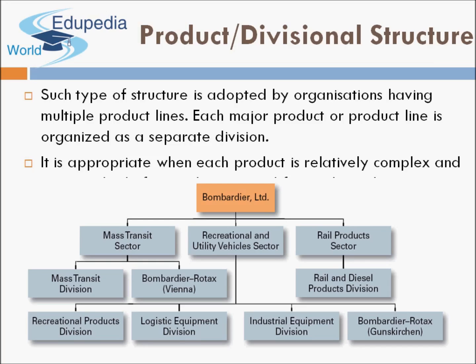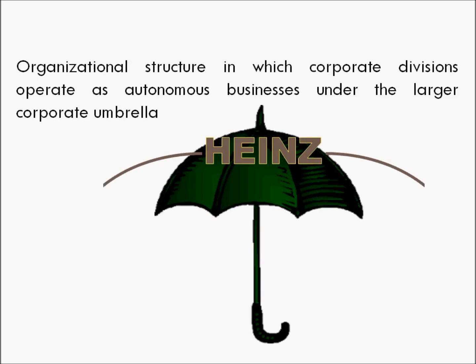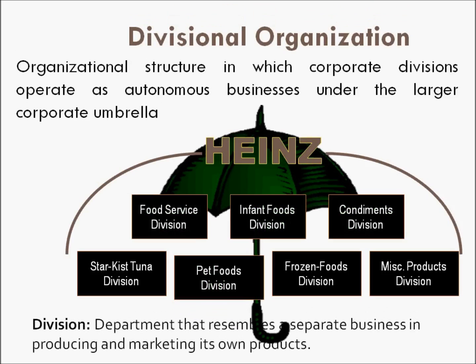Another example is Heinz, a company in the FMCG industry. They have a Food Service Division, an Infant Food Division, a Condiments Division, a Star-Kist Tuna Division, a Pet Food Division, a Frozen Foods Division, and a Miscellaneous Products Division. Depending upon the different types of food they produce, they have departmentalized their organization.